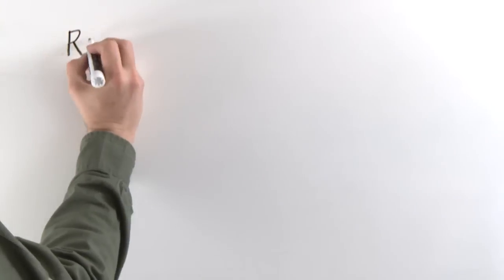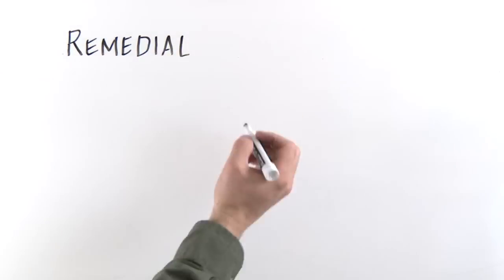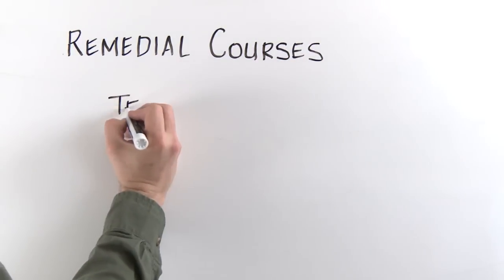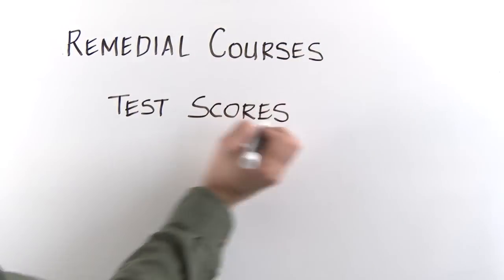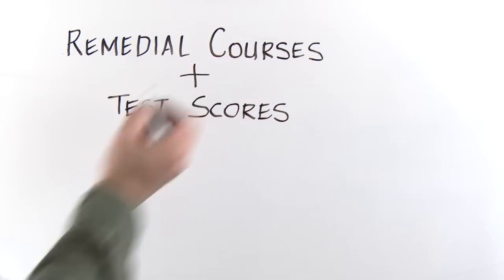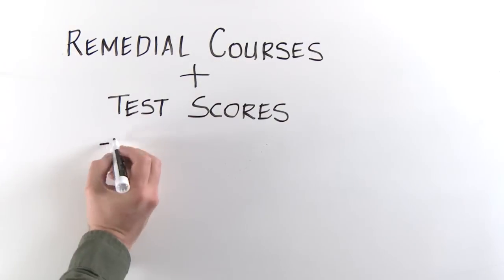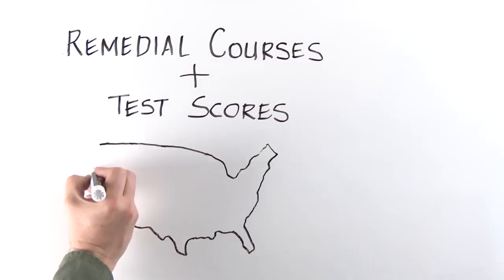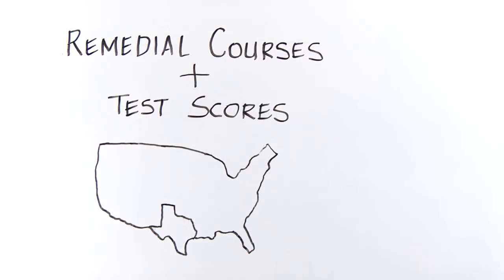The remedial rate, which is a way of measuring how many students need remediation, is calculated differently in each state. In some states, remedial rates are determined simply by how many students take remedial courses. In other states, they use test scores. And in a few states, the remedial rate is determined by including both students who take remedial courses and students who are assessed as needing remediation by a test.